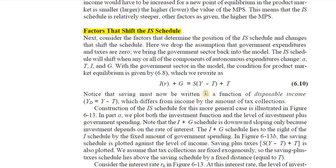Let's talk about the factors that can cause a shift in the IS schedule. We now incorporate the government sector, because as far as the IS schedule is concerned, when we were deriving it we omitted the government sector. But in reality, government is a major component of the economy. The government sector comprises G — government expenditure — plus taxes.